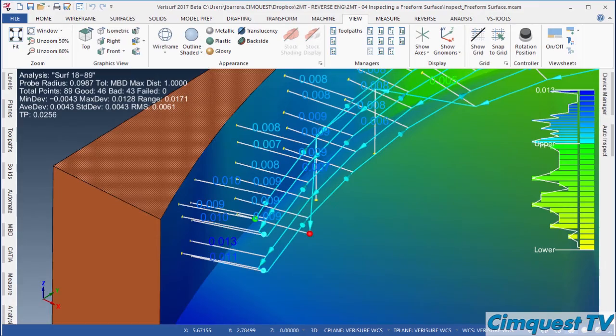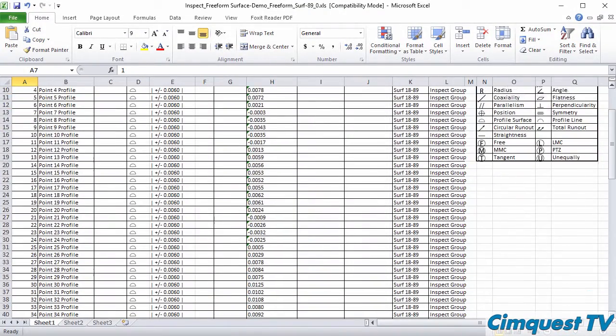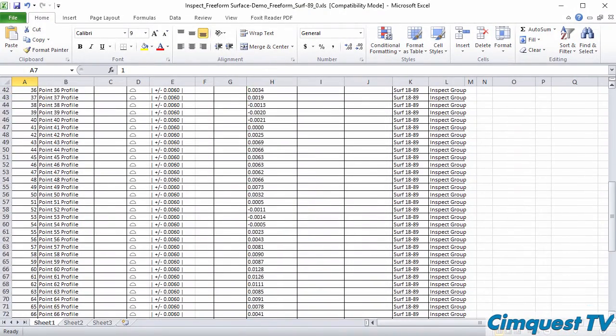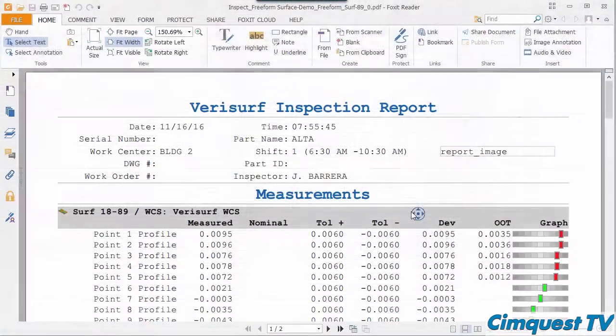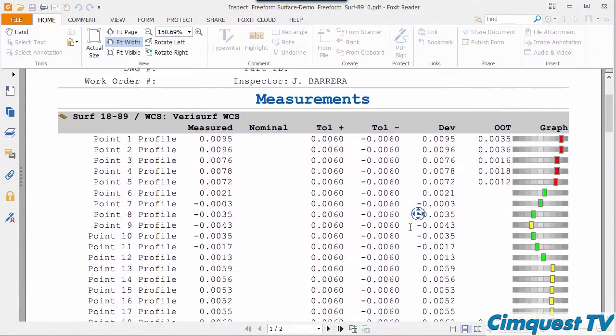Once this process is done, I can easily produce a first article inspection report per AS9102 RevB standard or output a PDF which contains the tolerance information.